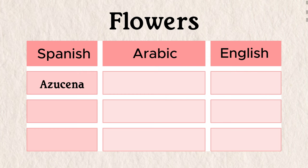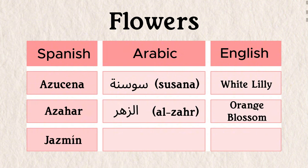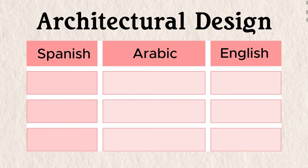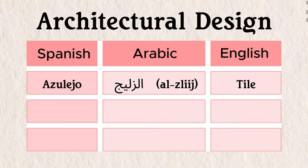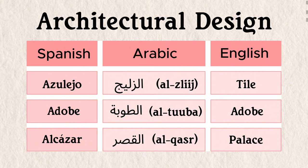That's why Spanish has Arabic flower names like: azucena (white lily) from as-susana; azahar (orange blossom) from az-zahar; jasmín (jasmine) from yāsamīn. And architectural design words like: azulejo (tile) from az-zulayjj; adobe (adobe) from aṭ-ṭūba; and alcázar (palace) from al-qaṣr.